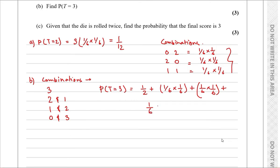P(T=3) = 1/2 plus (1/6 times 1/6) plus (1/6 times 1/6) plus (1/6 times 1/2). Adding these up gives the total probability of T equals 3.